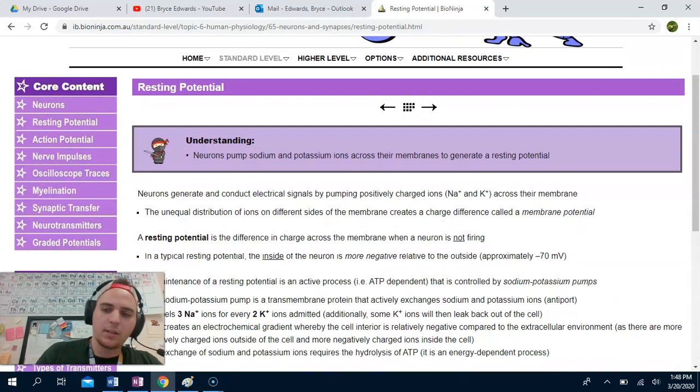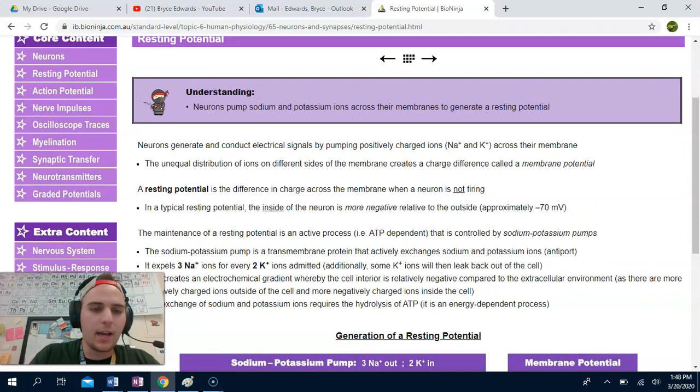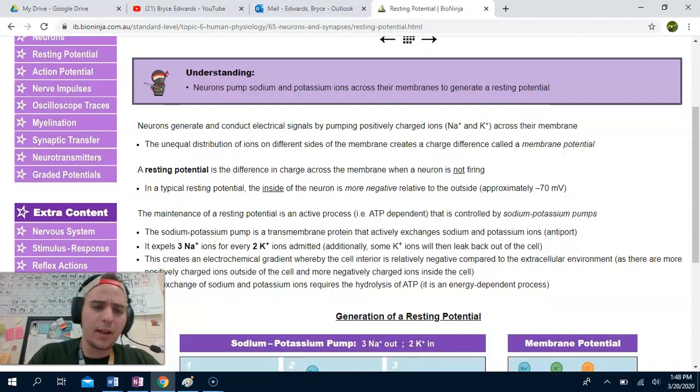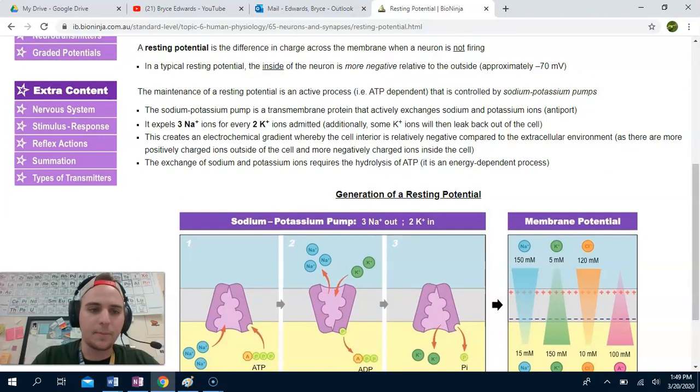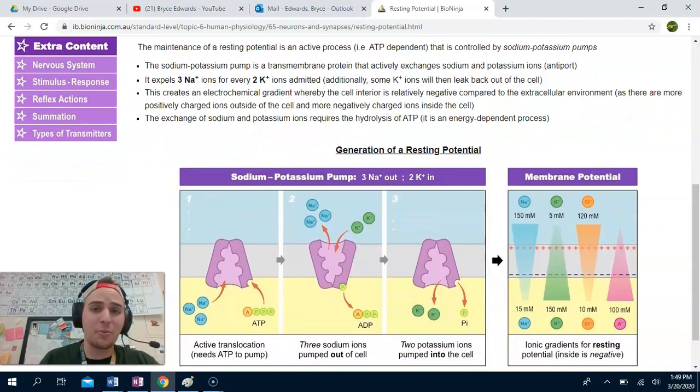So resting potential. Now this is where it actually gets a little bit confusing. The way that these signals actually get made is not the way that it gets made with an actual electrical wire that we are familiar with. It's a little bit more chemical. Neurons generate and conduct electrical signals by pumping positively charged ions, sodium and potassium, across their membrane. This unequal distribution creates different charge across the membrane, which is called a membrane potential. The resting potential is the difference when a neuron is not firing. Usually the inside is more negative, the outside is more positive. There's a difference of 70 millivolts. Maintenance of resting potential is an active process. So ATP is being burned to maintain that potential.